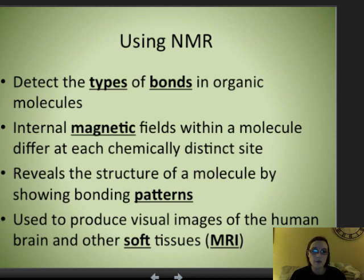And NMR is also used to produce visual images of either the brain or other soft tissue, which if you've ever had an MRI, so magnetic resonance imaging, if you've ever had an MRI, that is actually using NMR.